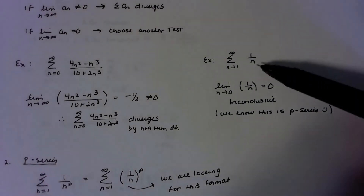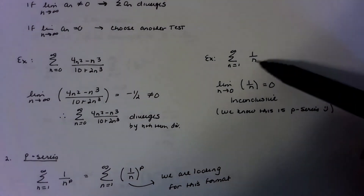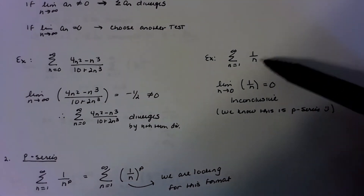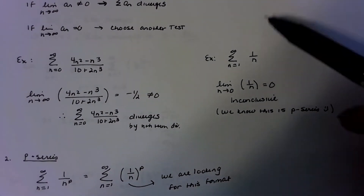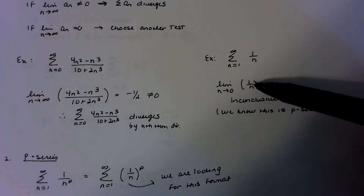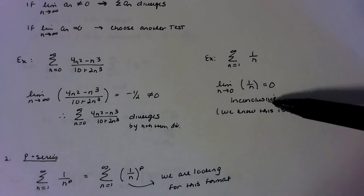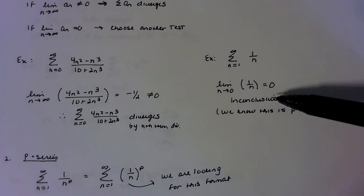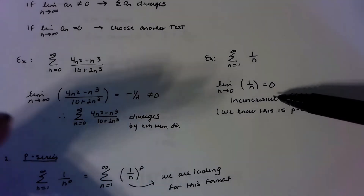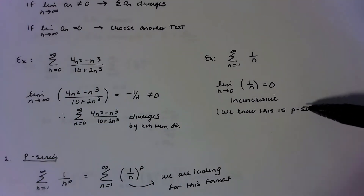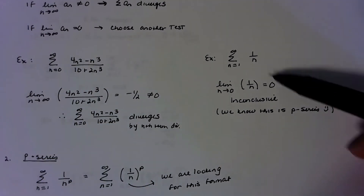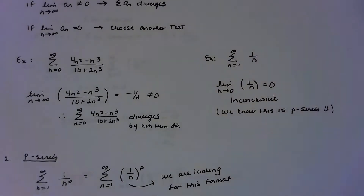Over here, if we take the limit, we get zero. Since it's zero, it's inconclusive — we need to use another test. And by now we know that this is a divergent p-series, p is equal to 1, and so this is going to diverge.